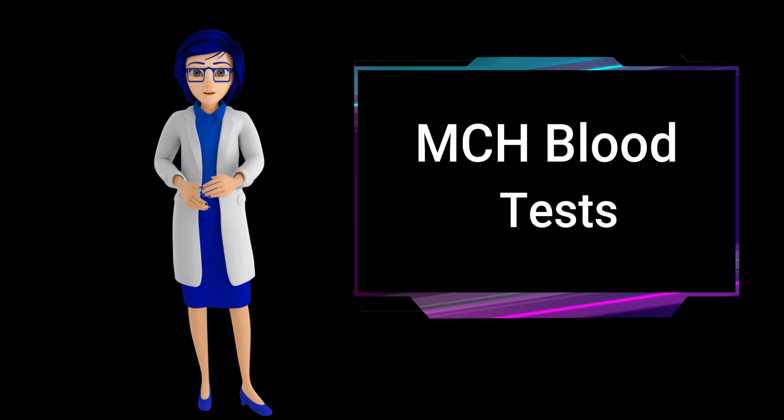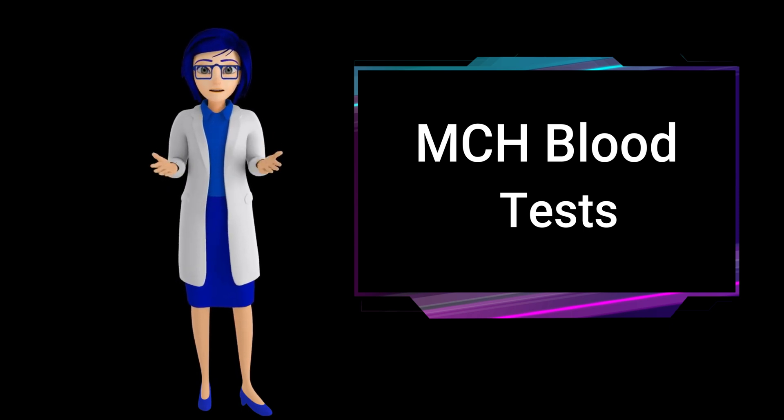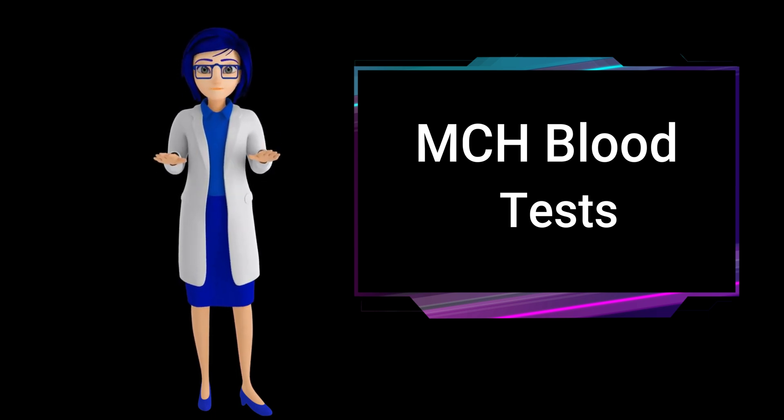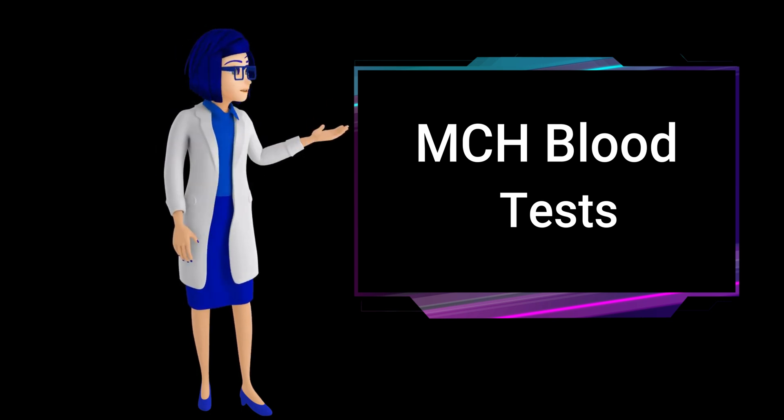Gastrointestinal symptoms such as nausea, vomiting, diarrhea, and constipation can be associated with megaloblastic anemia, contributing to high MCH levels.